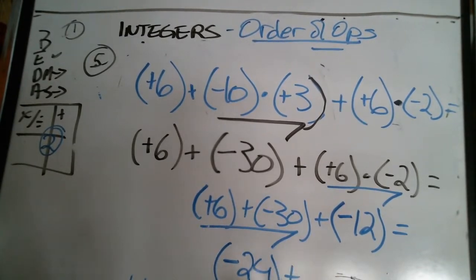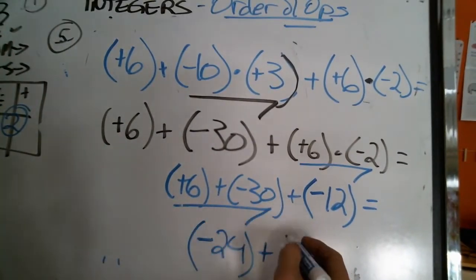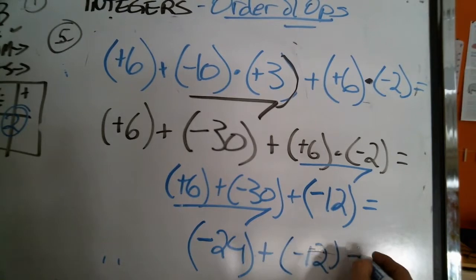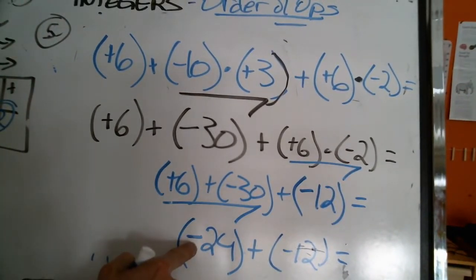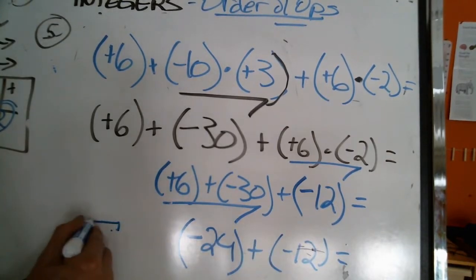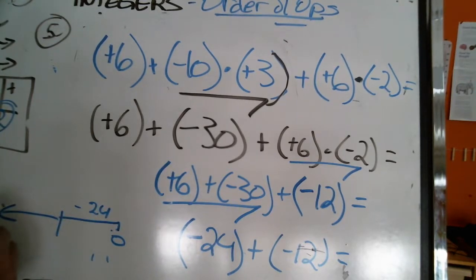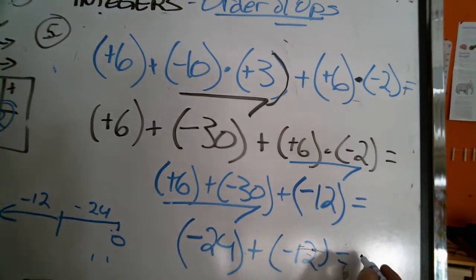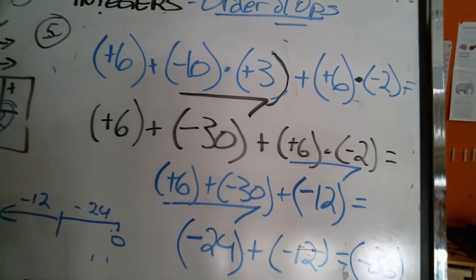Now I add negative 12. I have a negative team and another negative team — this is like going back from zero, minus 24, and then going back again 12 more — so it's going to be a bigger negative. Two plus four is six, one is 36 — negative 36.